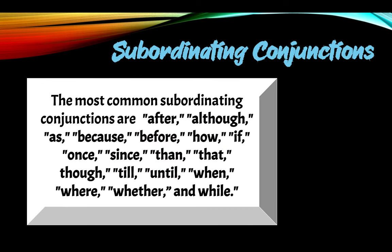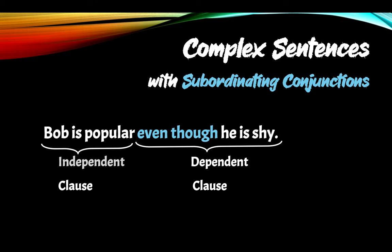The most common subordinating conjunctions are: after, although, as, because, before, how, if, once, since, then, that, though, till, until, when, where, whether, and while. There are many others — like, for example, even though. I'm going to give you an example right now: Bob is popular, even though he's shy. So we have an independent clause: Bob is popular, then a dependent clause because we start it with a subordinating conjunction, even though.